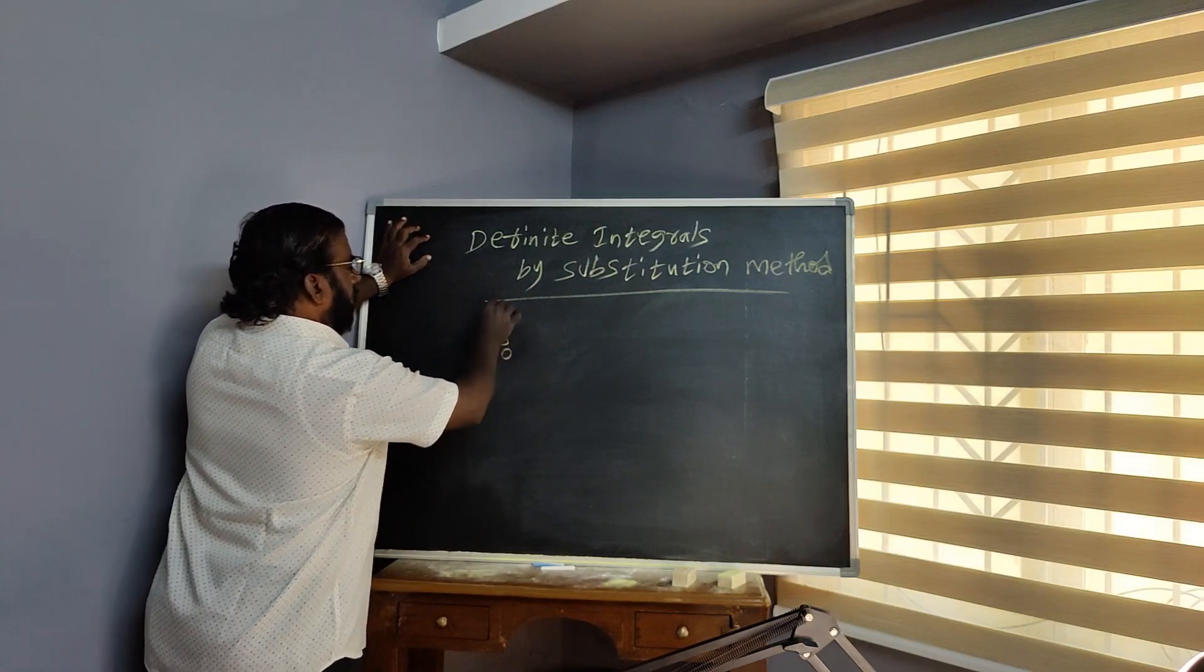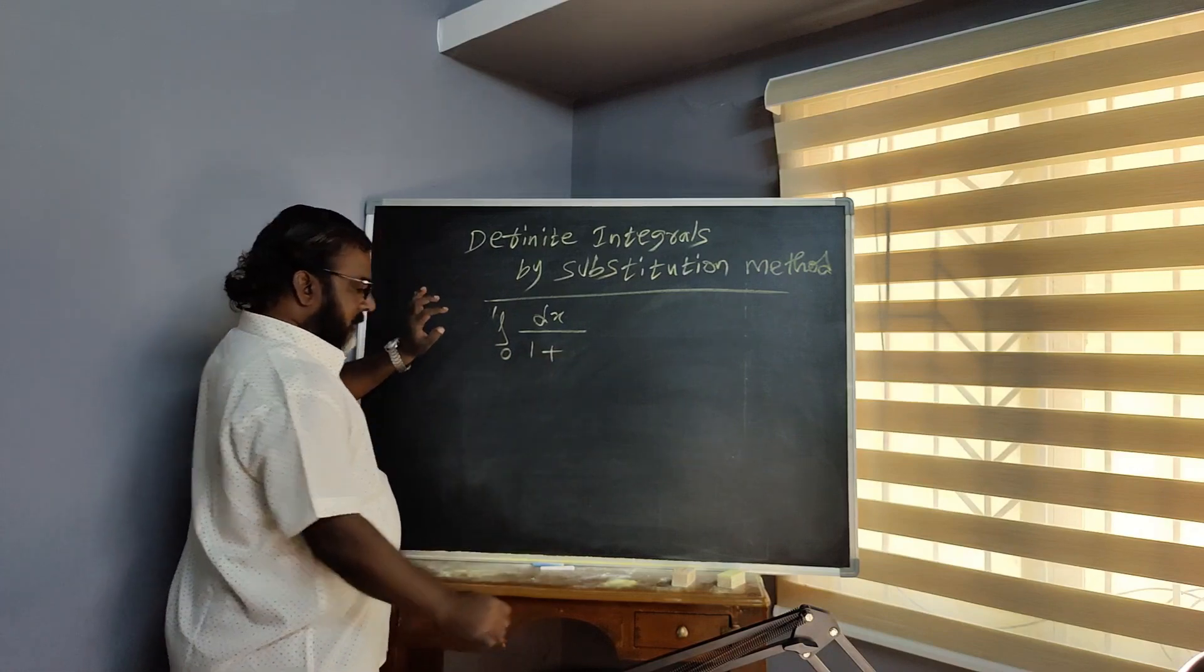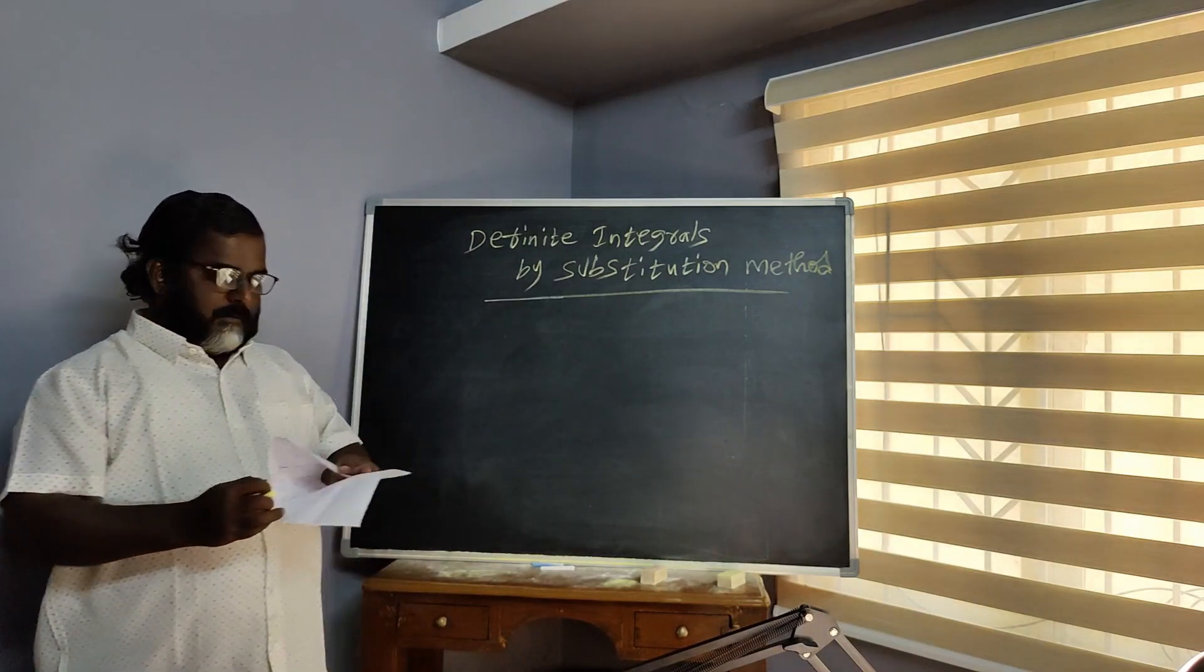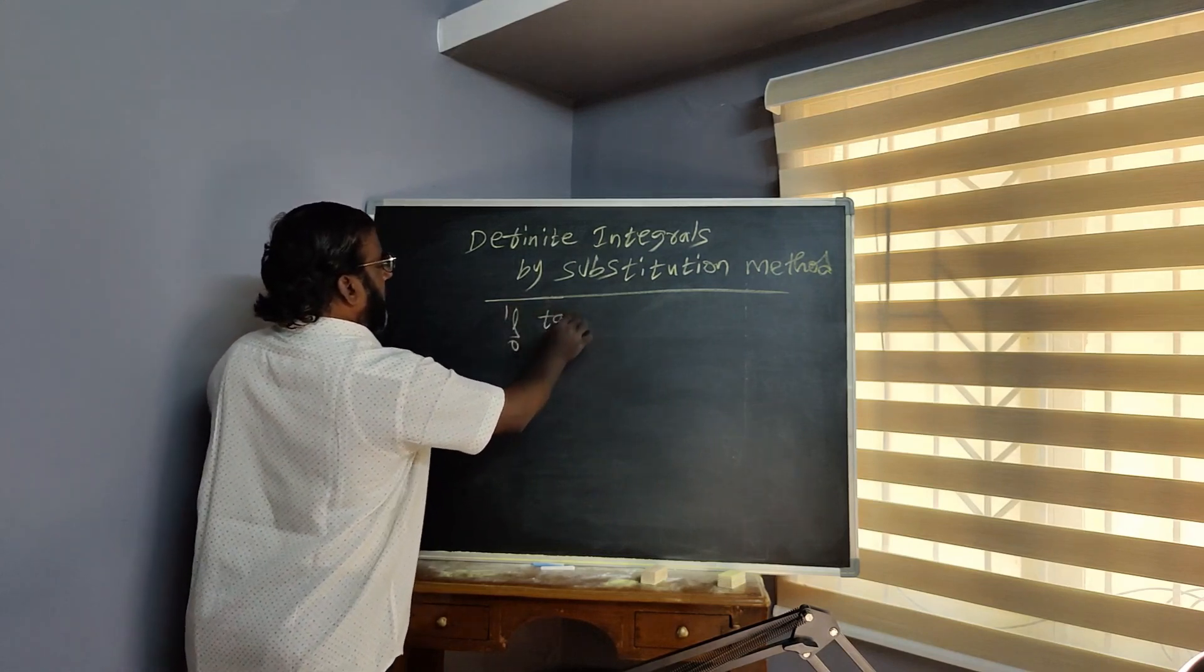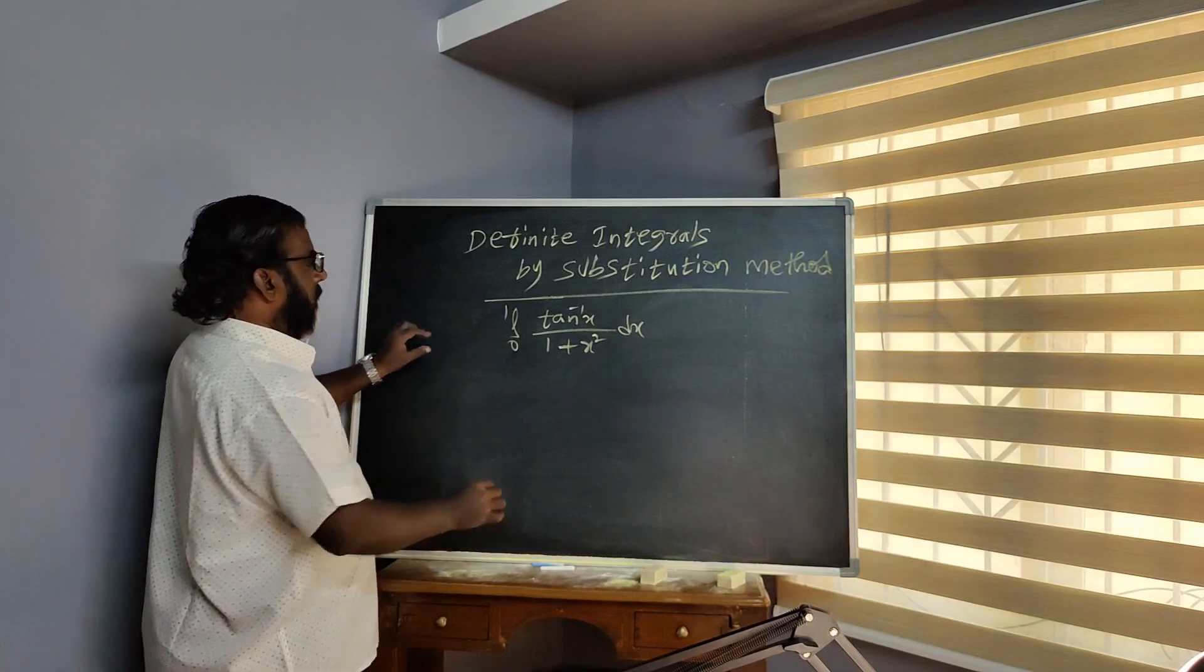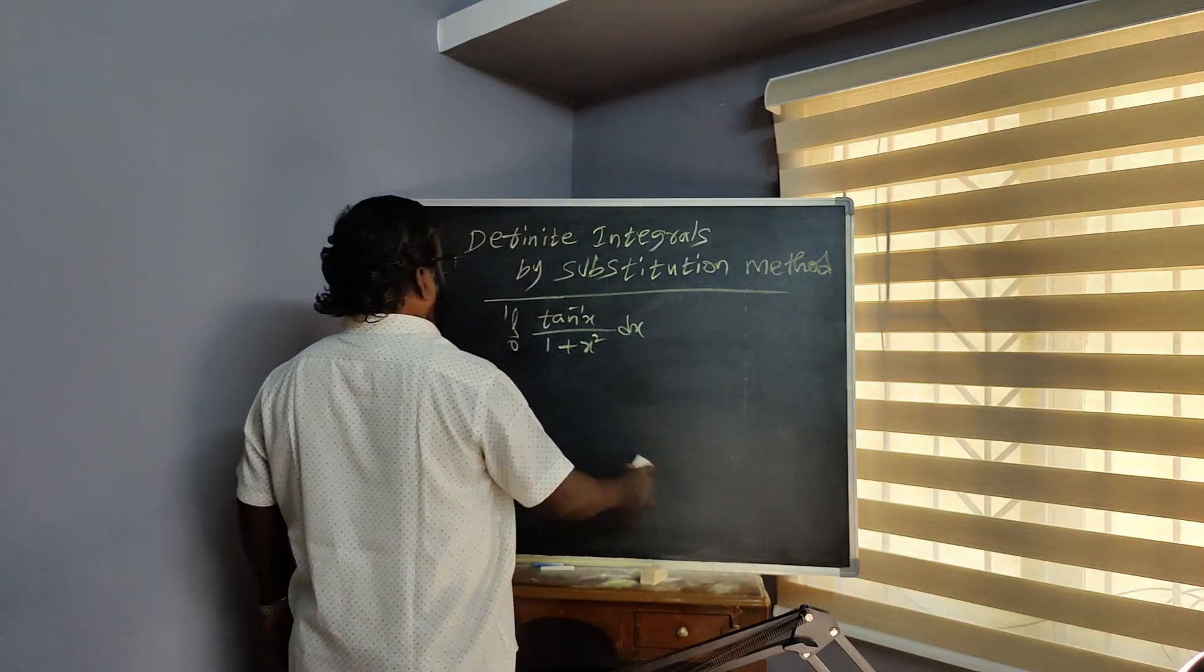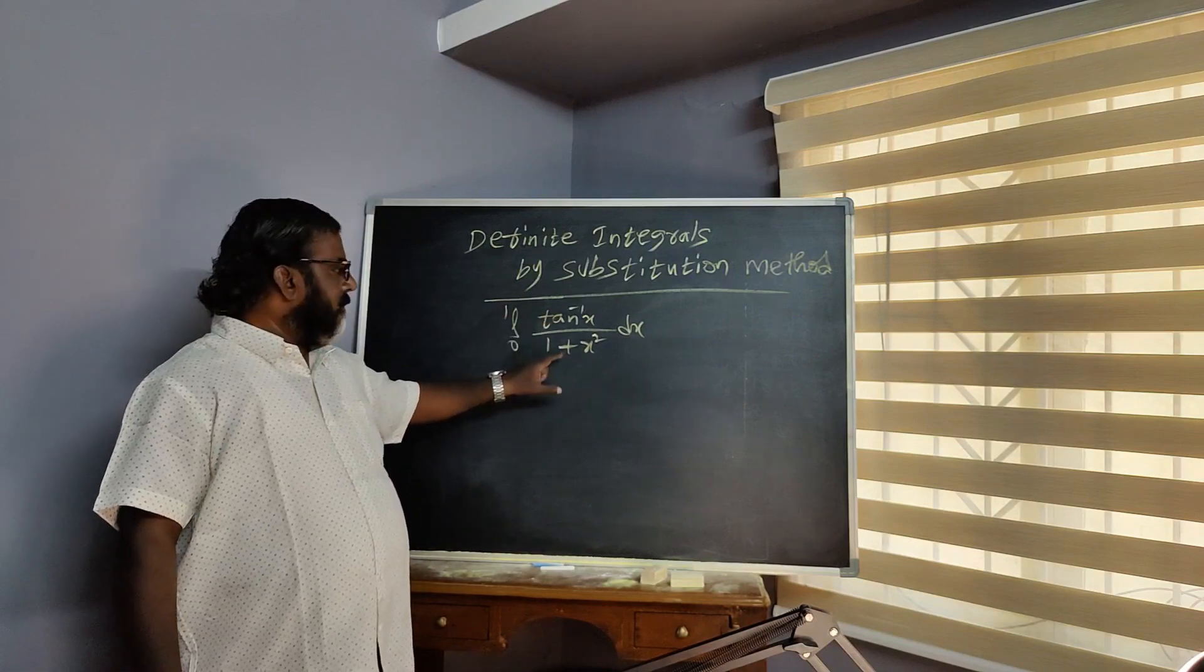We have the integral from 0 to 1 of tan inverse x divided by 1 plus x square dx. So, integral 0 to 1, tan inverse x by 1 plus x square dx.